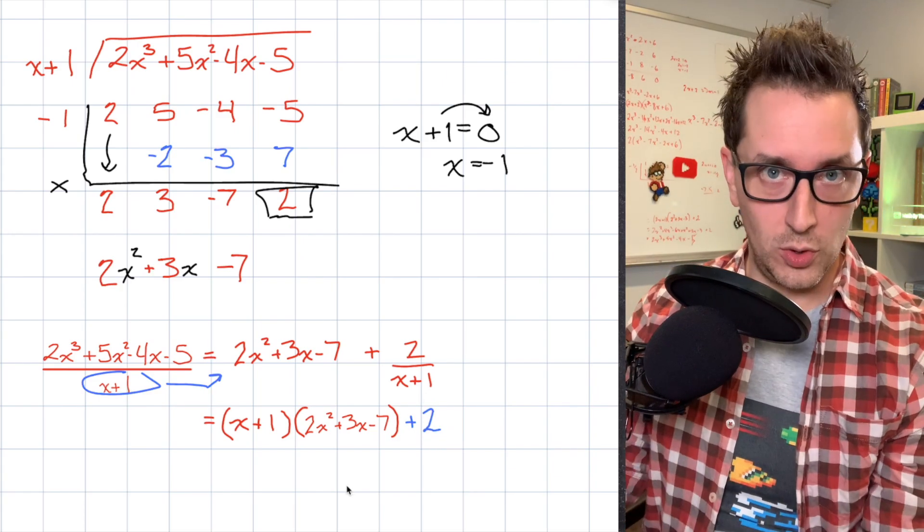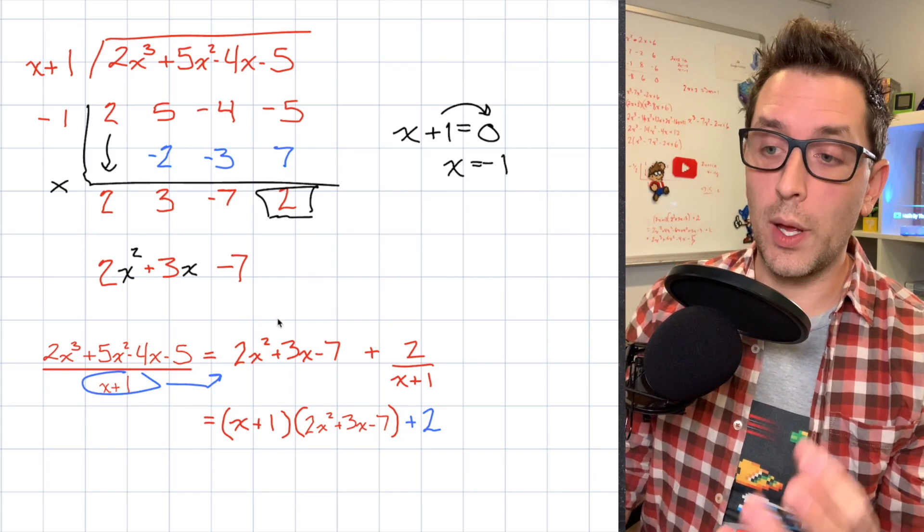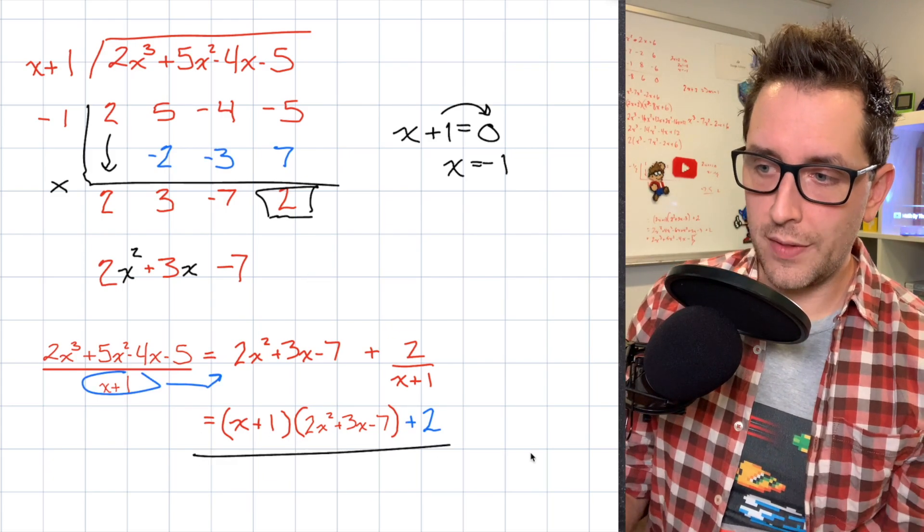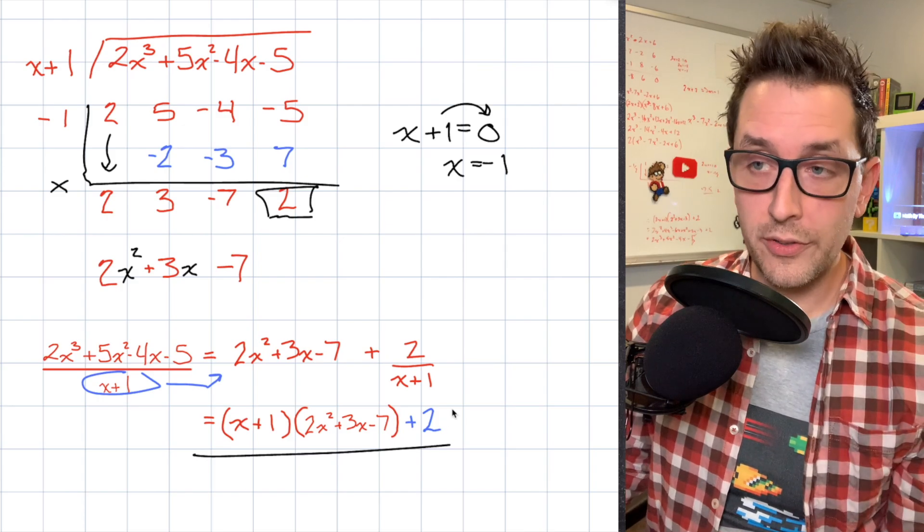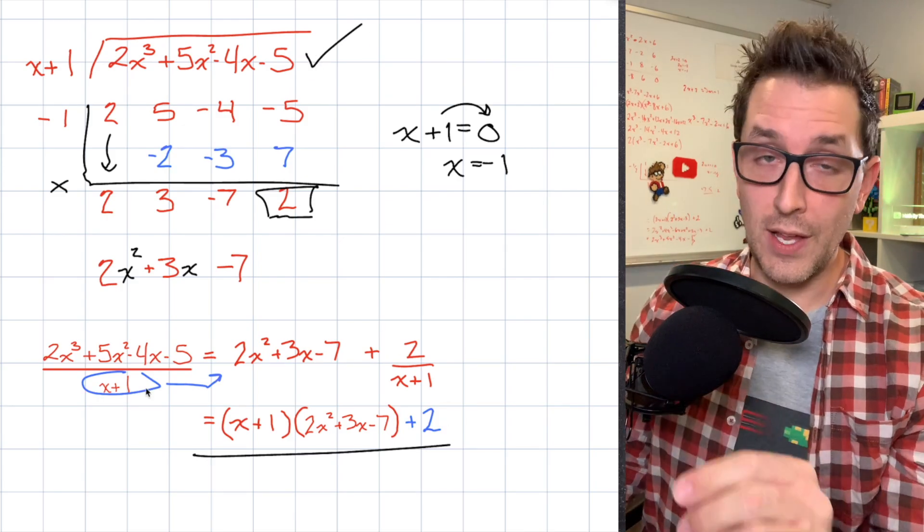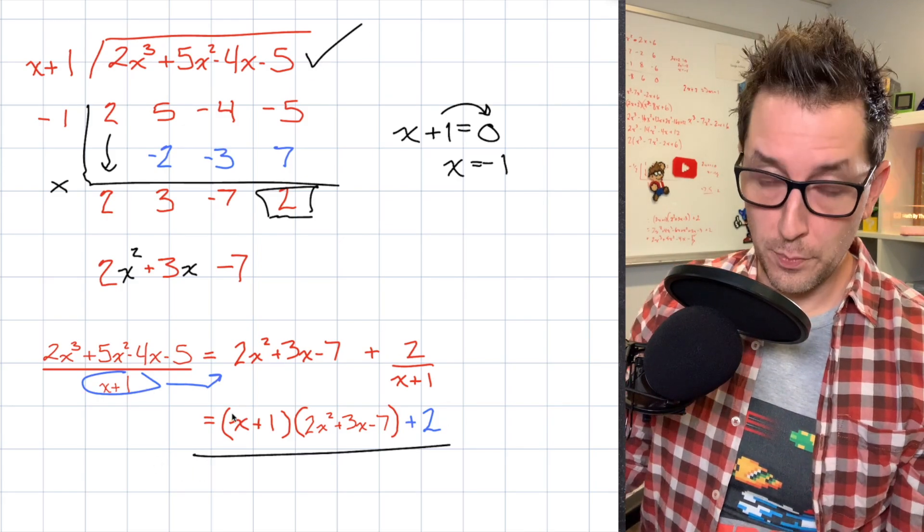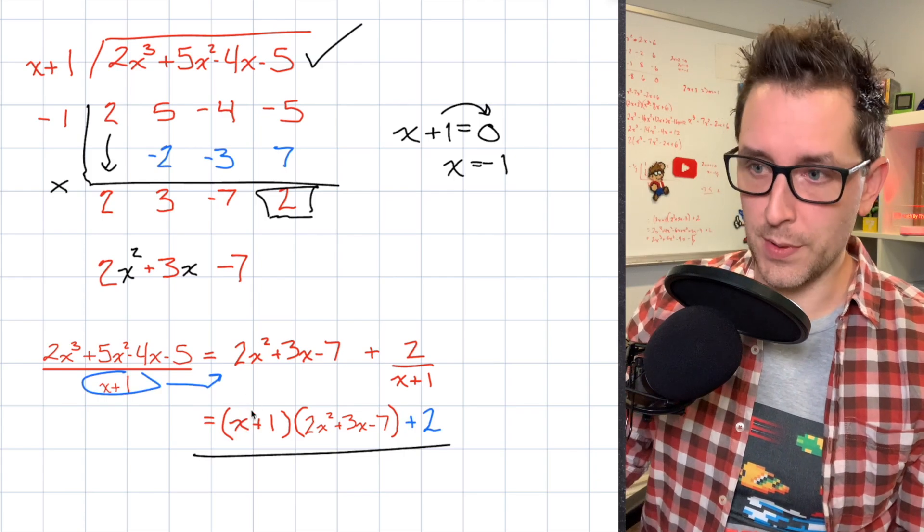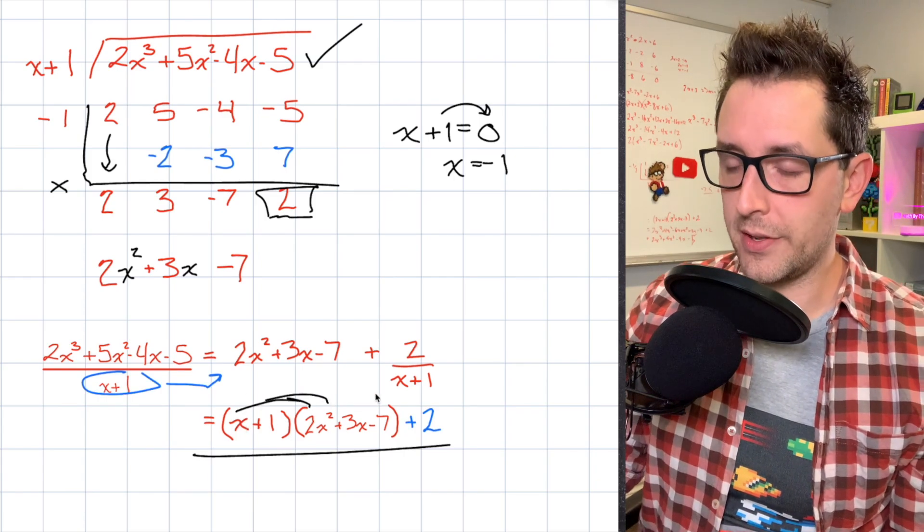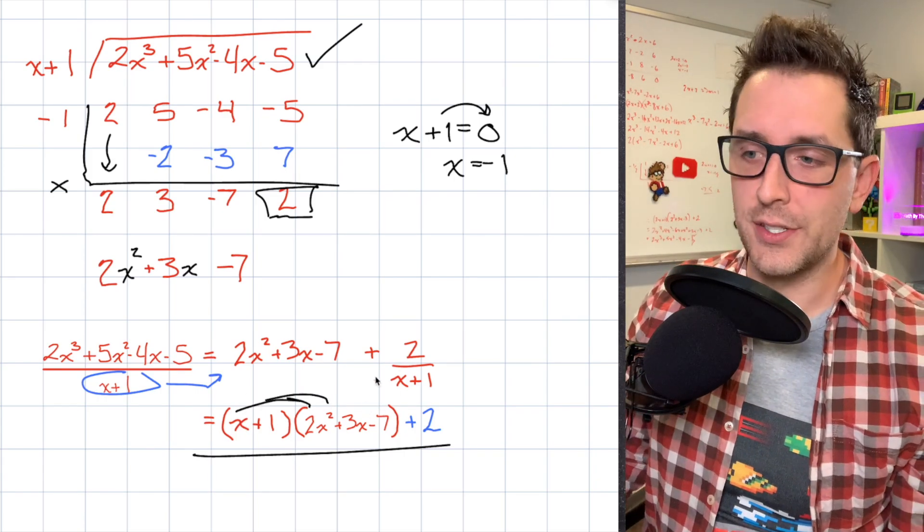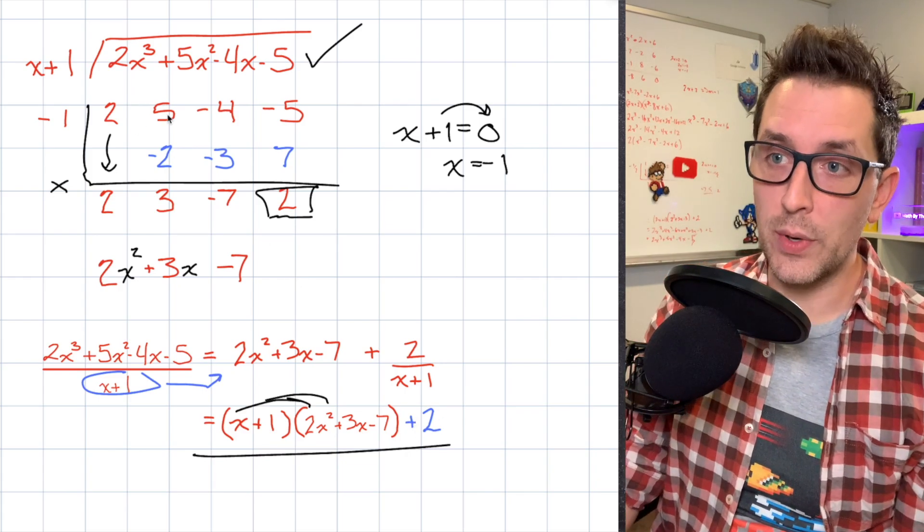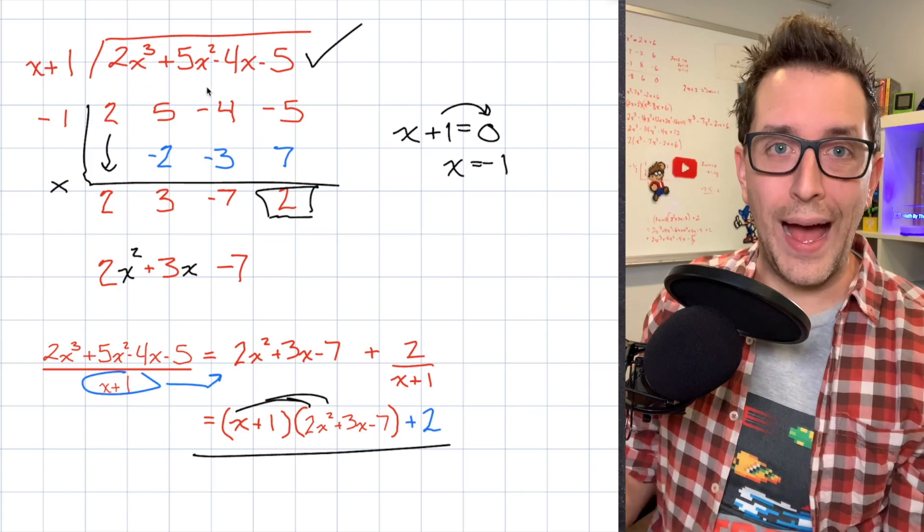Now let's talk about what this whole expression says. This tells me that when I performed my division, I ended up with an expression at the end that's going to be equivalent to my original dividend. Now in the interest of time, I'm not going to do this in this video, but if I were to take this binomial of x plus 1 and multiply each term into the set of brackets here, collect all my like terms, collect that remainder of 2 at the end, what you would see is that we do in fact get that original dividend back again.